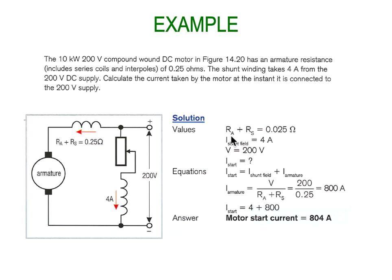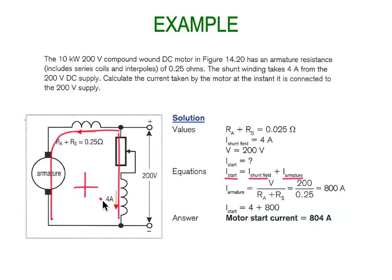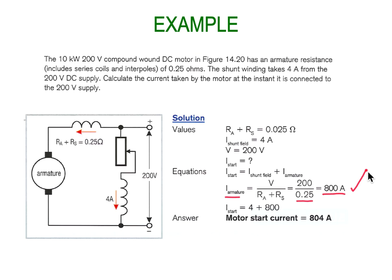The shunt winding takes 4 amps at 200 volts DC. We're going to calculate the current taken by the motor at the instant it is connected to the supply. We take the resistance of the armature, 0.25 ohms, and we know the shunt field is pulling 4 amps at 200 volts. The armature current is simply the voltage divided by the resistance: 200 divided by 0.25 is 800 amps.